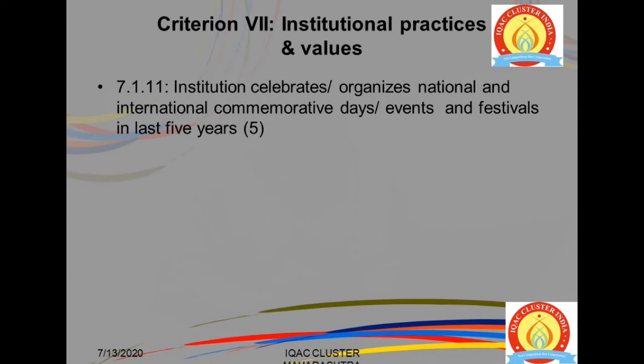Then we come to 7.1.11. The institution celebrates and organizes national and international days, events, and festivals. A list of activities from the last five years is required. The objective is to assess whether the institution is in good connect with the community. The values discussed in 7.1.10 are being represented through these days.